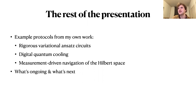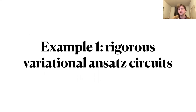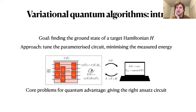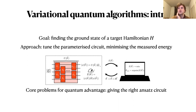The first example is rigorous variational ansatz circuits. Variational quantum algorithms are already being run on near-term quantum devices, with the hope that before full fault tolerance we can extract some use. The goal is to find the ground state of some target Hamiltonian. The approach uses a parameterized quantum circuit where you have angles that you can tune to change the output state.